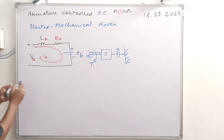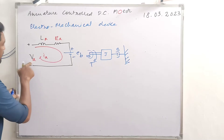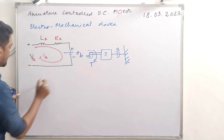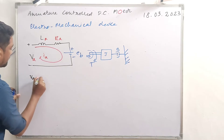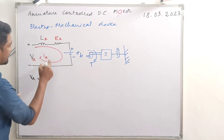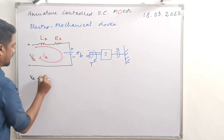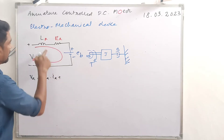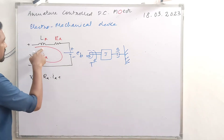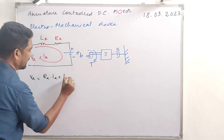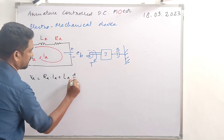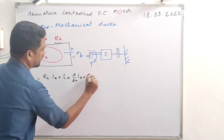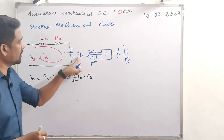Applying Kirchhoff's Voltage Law: Va equals the voltage drop across Ra plus the voltage across the inductor La plus back EMF Eb. So Va = Ra * Ia + La * (d/dt)(Ia) + Eb.